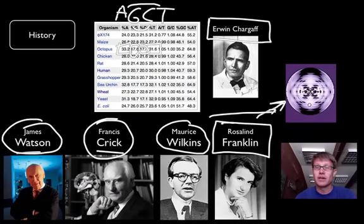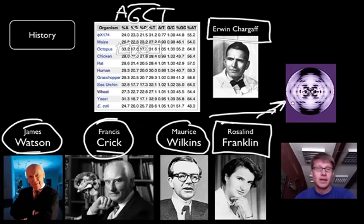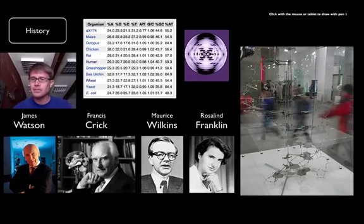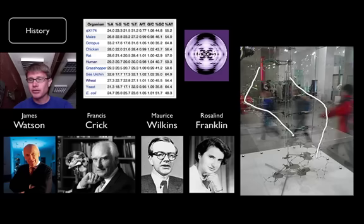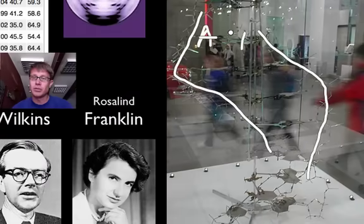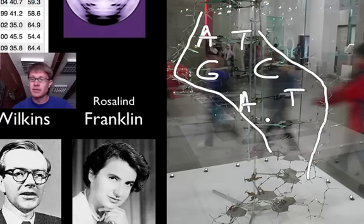They knew the structure of a helix from the work of Franklin and Wilkins, and they used models to figure out the structure of DNA. Why do we always have A and T equal and G and C equal? Well, if you look at the structure of DNA you have a backbone, and on the inside you have your bases. If you have an A on one side, a T will be on the other side. And if you have a C on one side, a G will be on the other side.